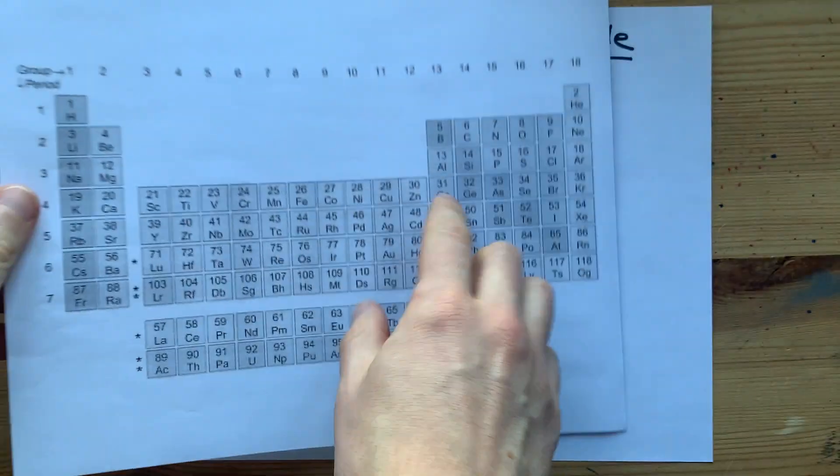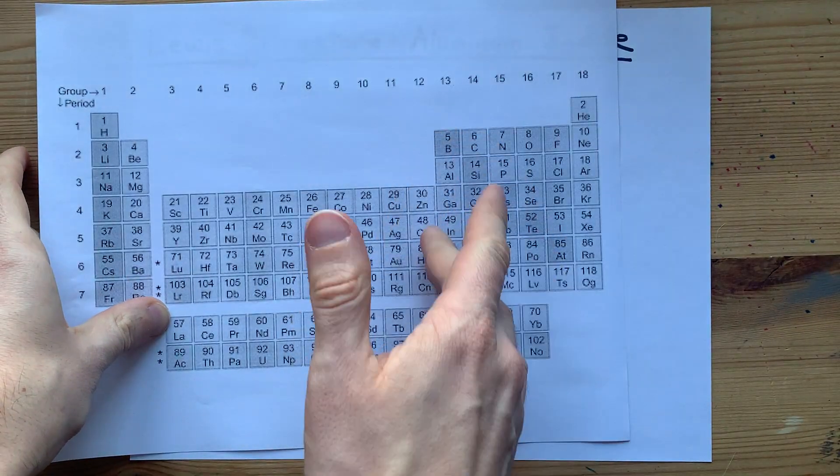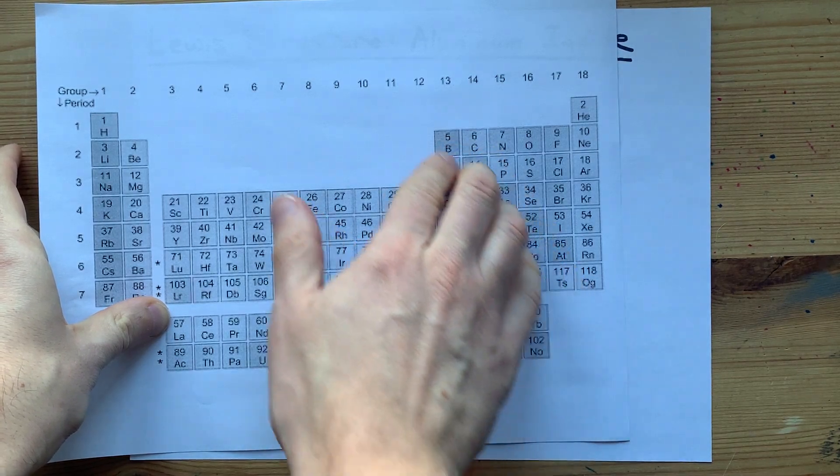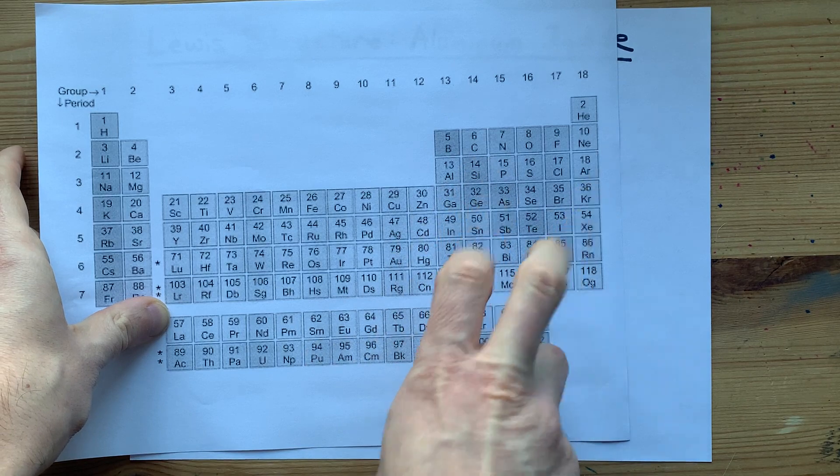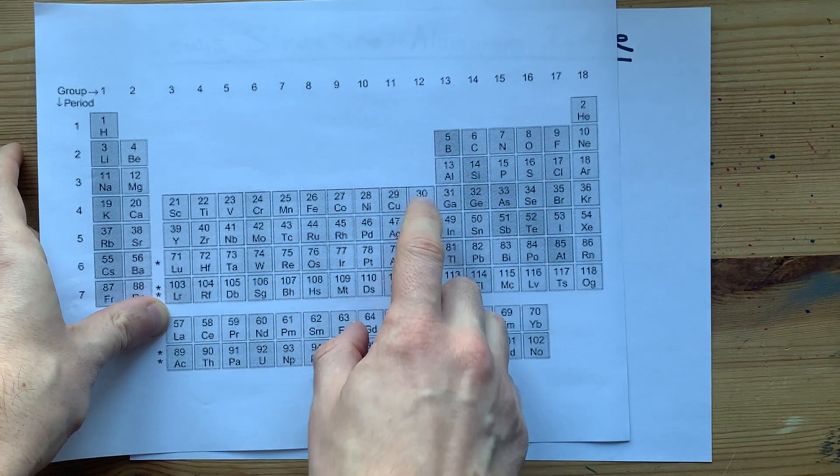Aluminum iodide is what you get when you mix aluminum, which is a metal. And I know it's a metal because this darkened staircase here is the semi-metals. Anything to the left of it is a metal.